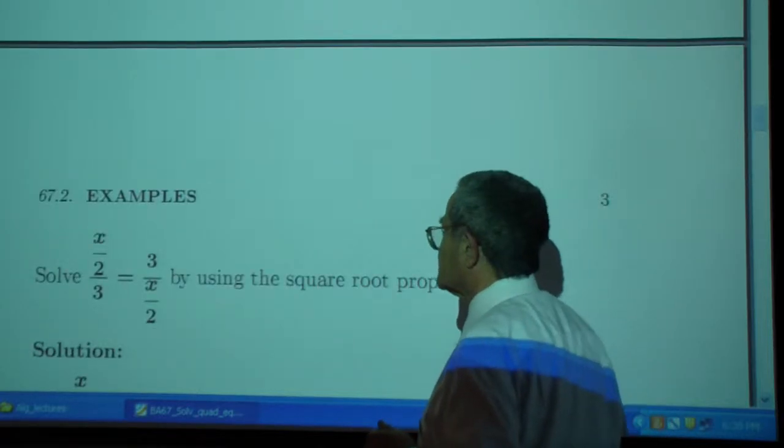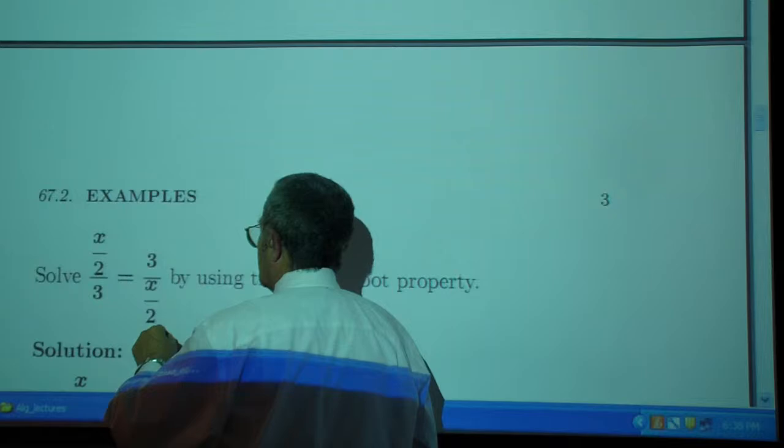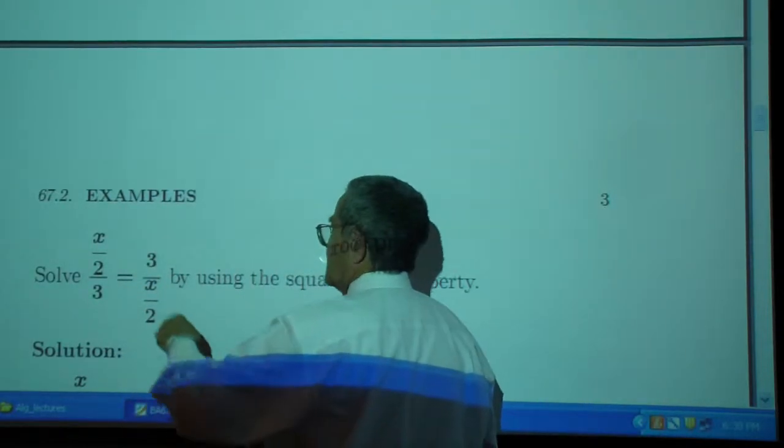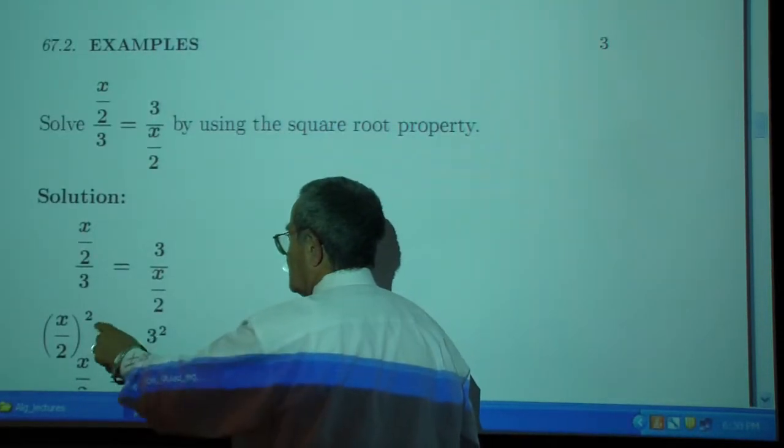Example 4. I have x over 2 equals 3 over x. I'll cross multiply. That gives me x squared over 4, which is equal to 9.